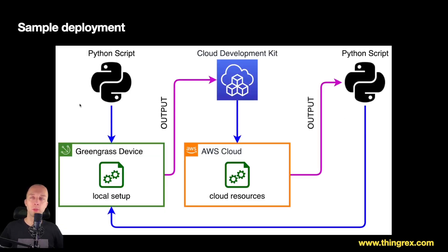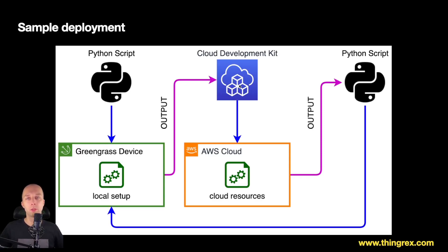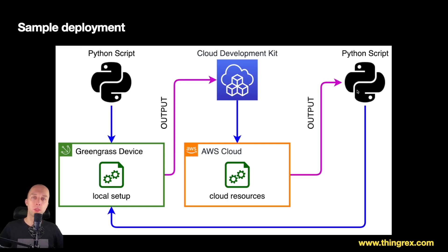This is the sample deployment. We've got three steps. The first step is the Python script that creates the local assets on our Greengrass device. Those assets are used as input for the Cloud Development Kit. CDK is the suggested tool to handle AWS infrastructure. We use CDK to create assets in AWS cloud, and those assets will be used by Greengrass at the very end. Then the output of CDK goes once again as input to our Python script to obtain final data and generate the configuration file.